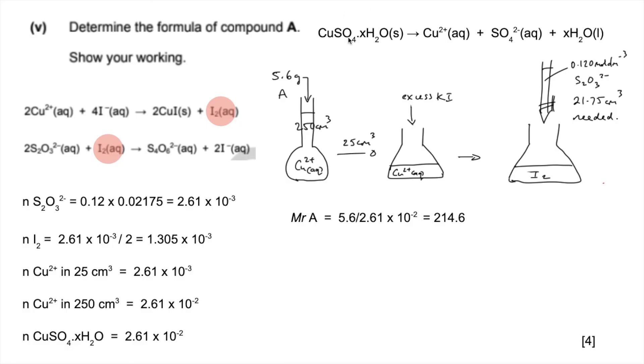We know part of its formula. If we subtract off what we know—subtract away the CuSO₄ part—we get that x·H₂O has a mass of 55. Dividing that by 18, the Mr of water, we get x equals 3. So the formula of A is CuSO₄·3H₂O.